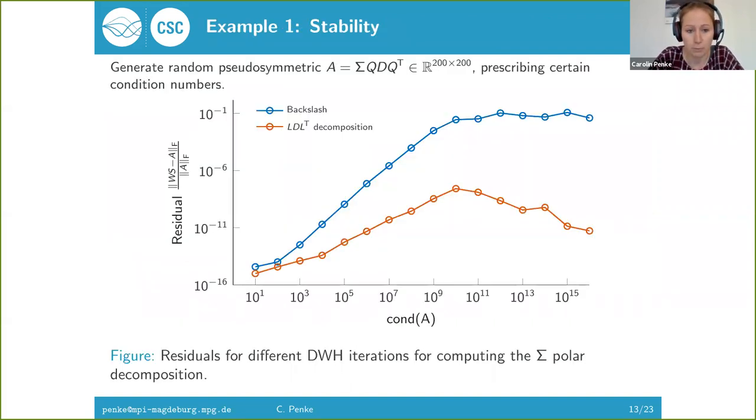Let's look at a first numerical example. If you naively implement this iteration and use the backslash operator in MATLAB, we can see that for badly conditioned matrices the accuracy becomes really bad. If you use the LDLT based iteration which is already aware of the structure, we already get much better results. I cannot really explain why the accuracy becomes better again for badly conditioned matrices. If you have any idea let me know. But we are not happy with this yet. Can we devise an iteration that gives us better results?